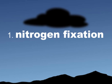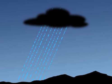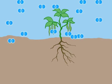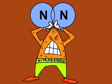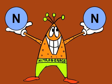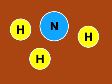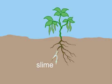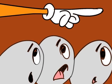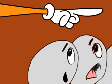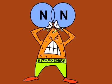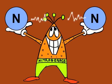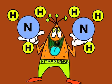Step one: nitrogen fixation. Nitrogen can enter soil from rainwater or runoff. Once underground, certain bacteria use the enzyme nitrogenase to break apart the strong nitrogen bonds. The nitrogen is then combined with hydrogen to form ammonia. The bacteria work under layers of slime on the roots of plants or in small nodules on the roots.